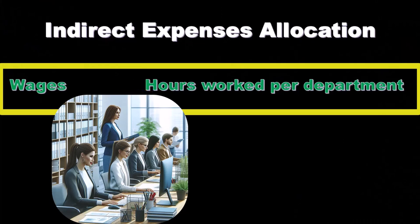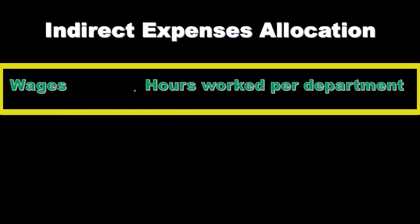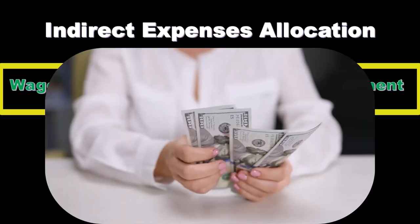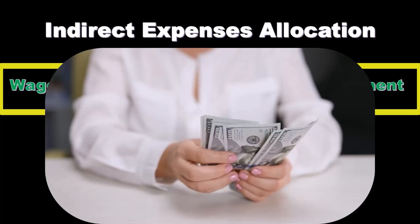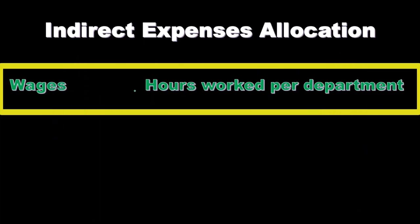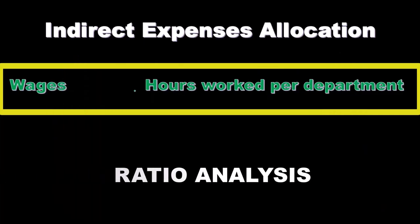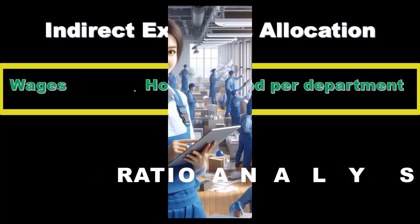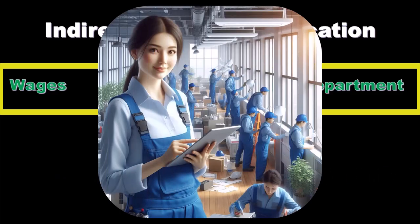If we're talking about wages of individuals working in multiple different departments, we can think about what would be a good activity base to apply wages to multiple departments. If we know the hours people worked within different departments, we can use ratio analysis — look at the relative hours per department as a percentage of the total — and use that to allocate out the wages accordingly.